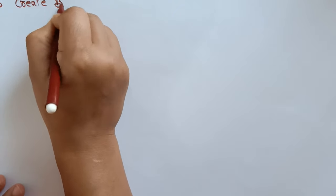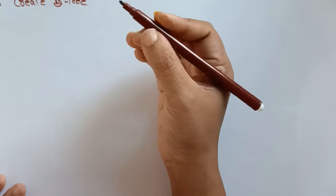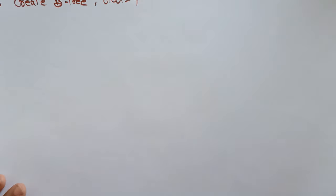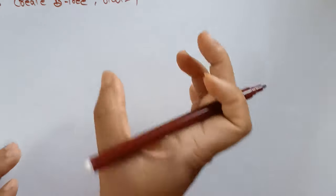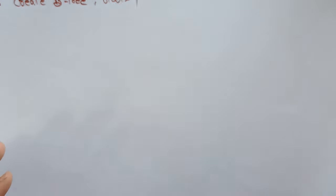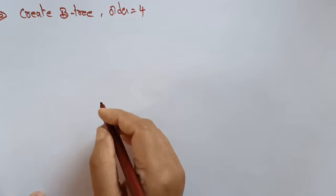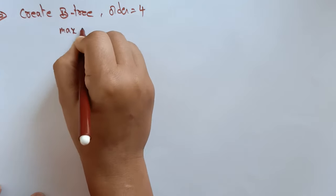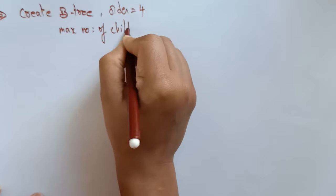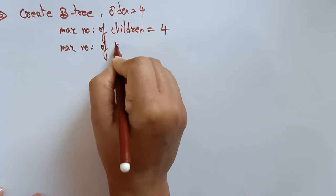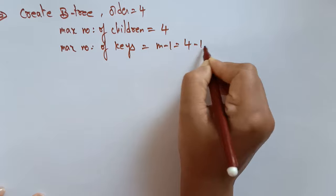So I need to create a B-tree of order 4. Order 4 is nothing but the degree of that B-tree. B-tree of order 4 means each node can have 4 children and 3 keys. The maximum number of children is 4, and the maximum number of keys is m-1, that is 4-1 equals 3.